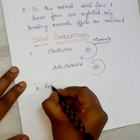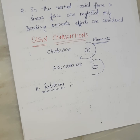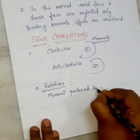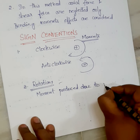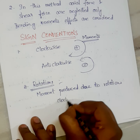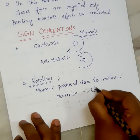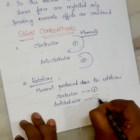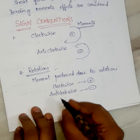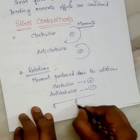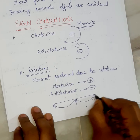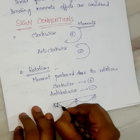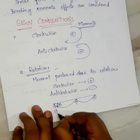The next sign convention is for rotations. The moment produced due to rotations — clockwise rotation is taken as positive, and anti-clockwise rotation is taken as negative. For example, with a continuous beam, it will deform and some angle is formed. If this rotation is in the clockwise direction, it is taken as positive.